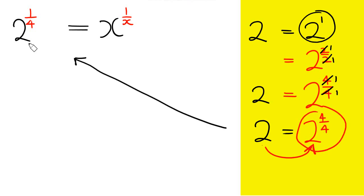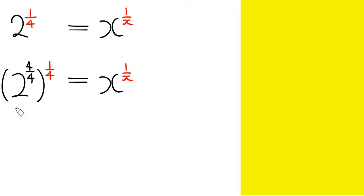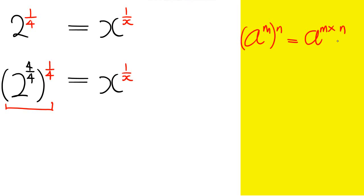Coming back to this expression, I'm going to write 2 raised by the power of 4 over 4 instead of just 2. So the expression becomes: 2 raised by the power of 4 over 4, then raised by the power of 1 over 4, equals x raised by the power of 1 over x. Now we apply the index rule which says when we have a raised by the power of m in brackets, and another power n outside, we multiply both powers — the one inside and the one outside the bracket.